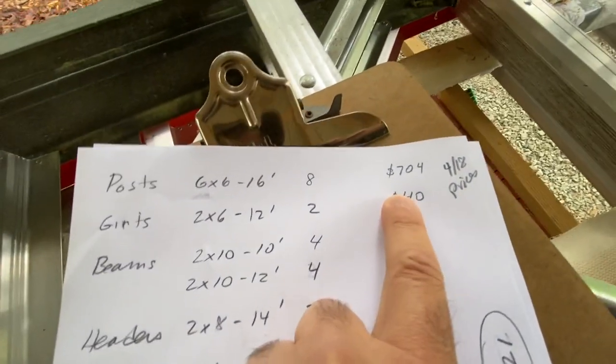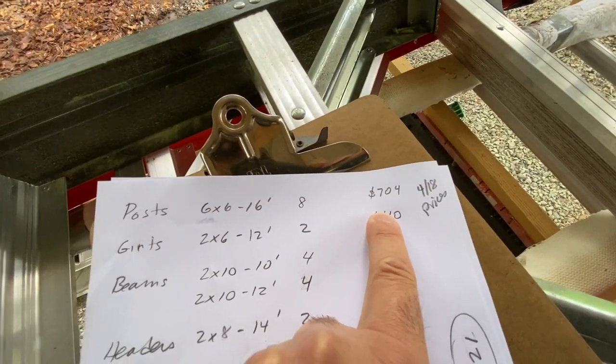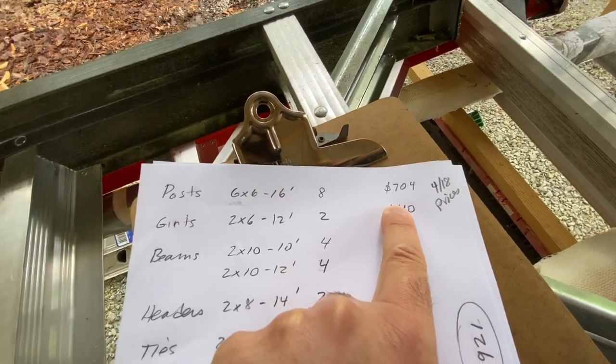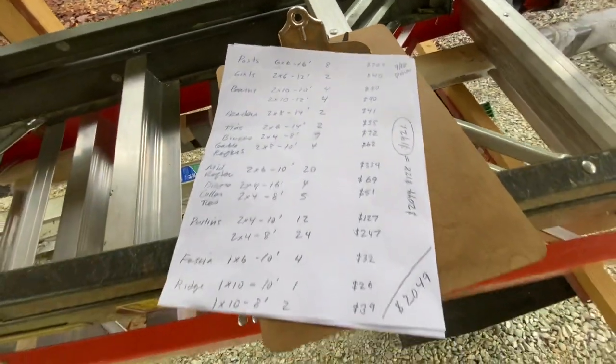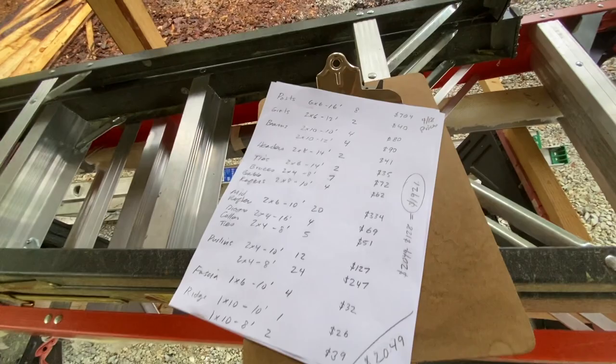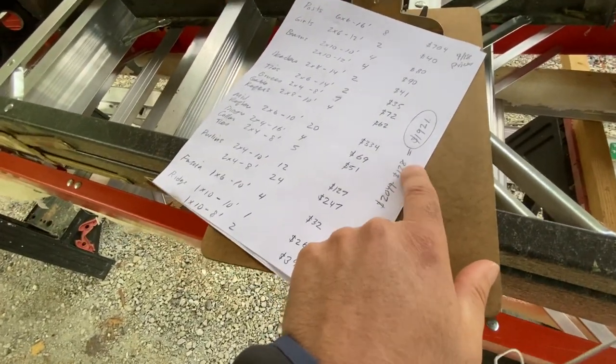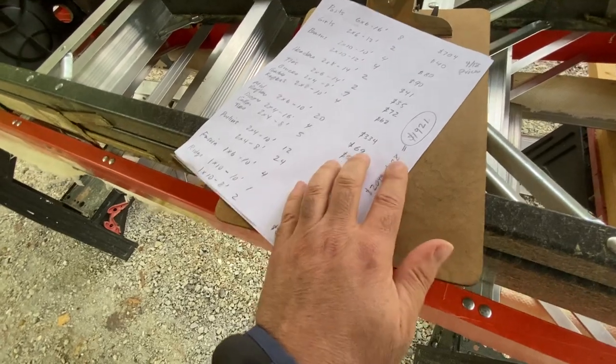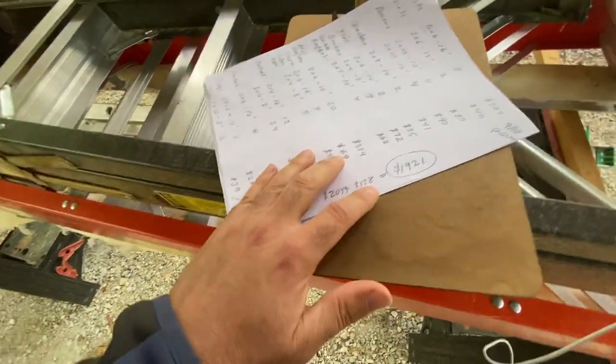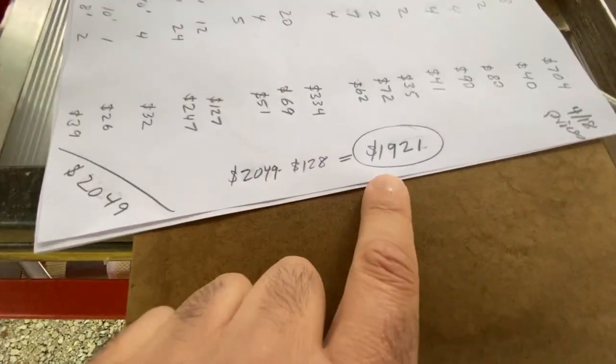I priced out what it would have cost for treated 6x6 16-footers - eight of them. That alone would have been $704, which is ridiculous. Doing it the way I did, the top 12 feet of the post were free. I paid $128 to make the bottoms of the posts treated for ground contact.